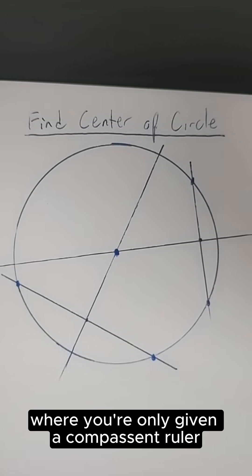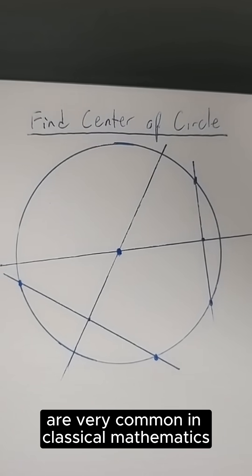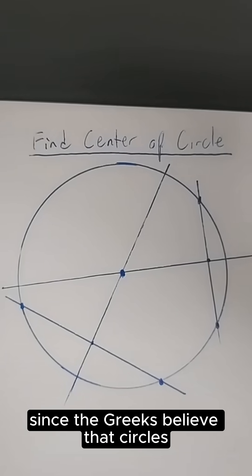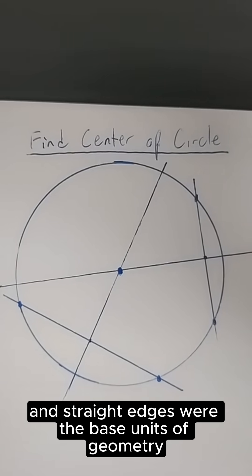These types of problems where you're only given a compass and a ruler are very common in classical mathematics, since the Greeks believed that circles and straight edges were the base units of geometry.